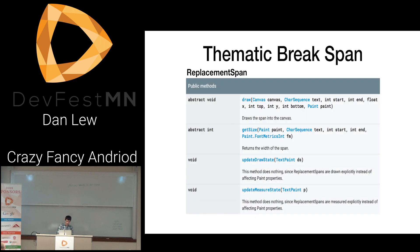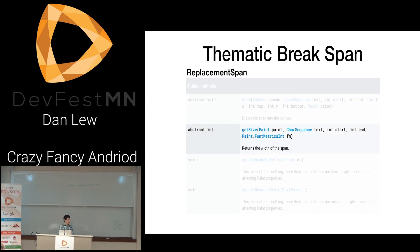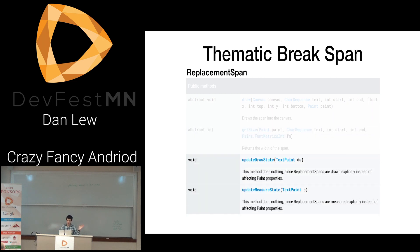Going to the API: the draw function draws the span on the canvas — great, I'll just draw a rectangle. getSize returns the width of the span, but I want to define the height. It turns out you take the FontMetricsInt that you get and define the height of that to define the height of the replacement span — which is bonkers, since I'm messing with font metrics to define the height of something replacing font. There are also two functions that come along with it where the API itself says 'these do nothing,' because text views see a replacement span and actively ignore those bottom ones. The span API is really weird.